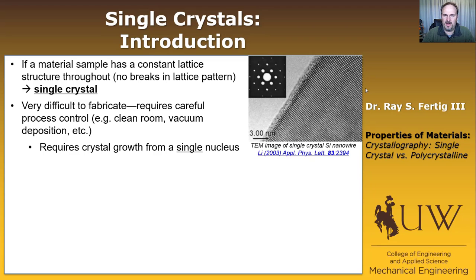Otherwise, if we have multiple nuclei growing together, they won't necessarily form the same lattice — they're going to come together and form some kind of a boundary. We'll talk about that in just a minute.